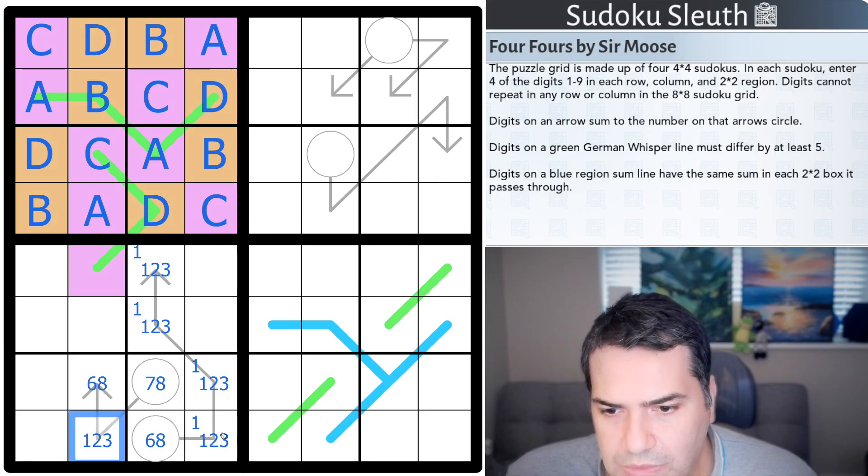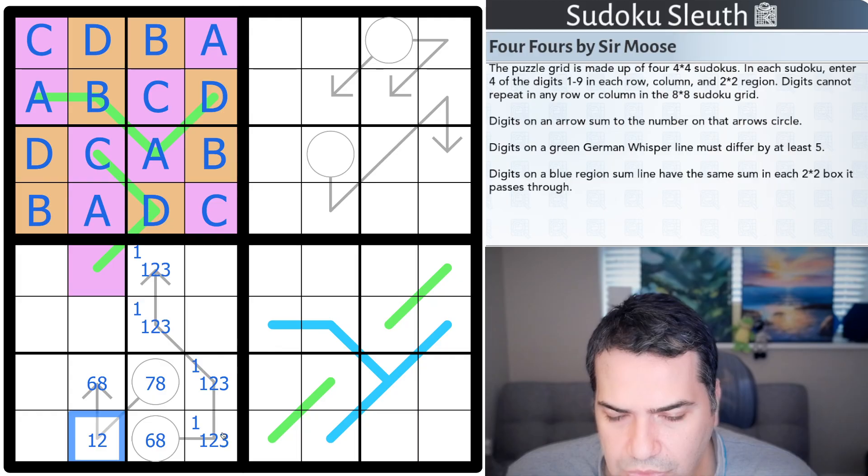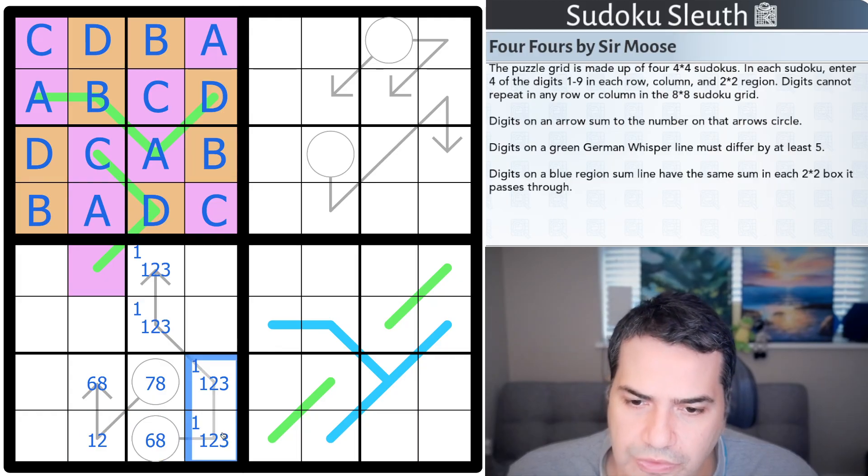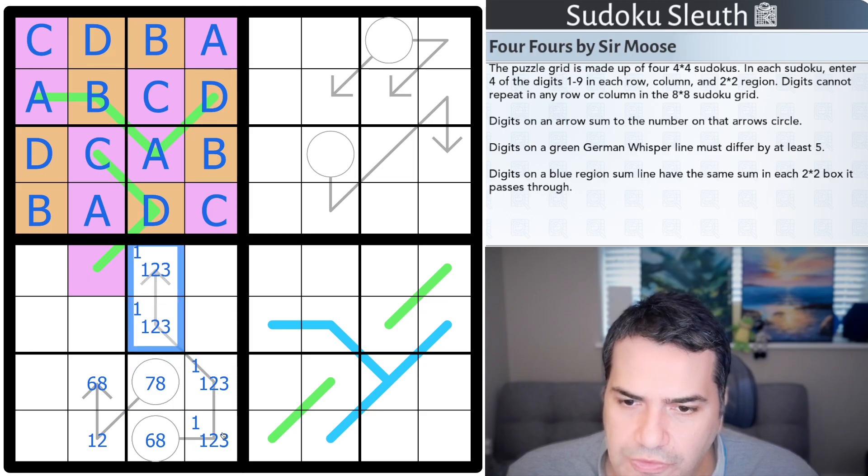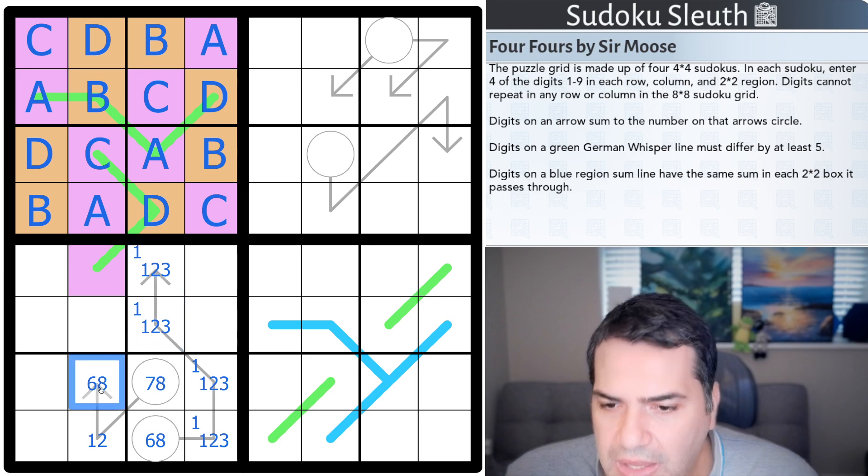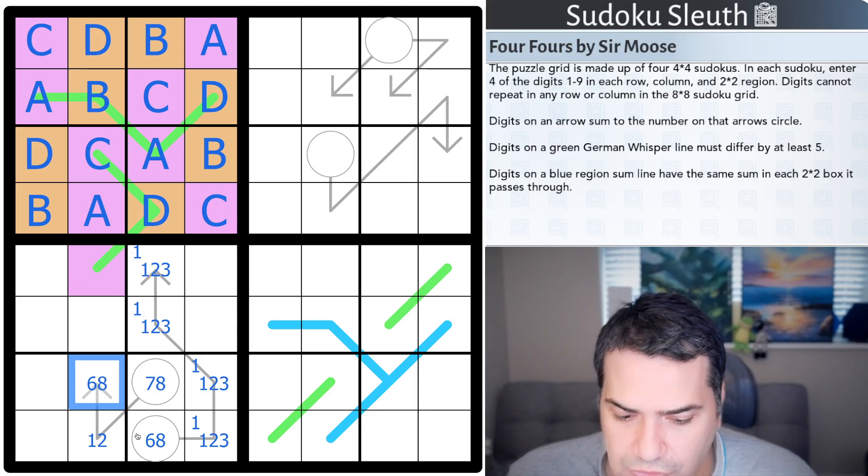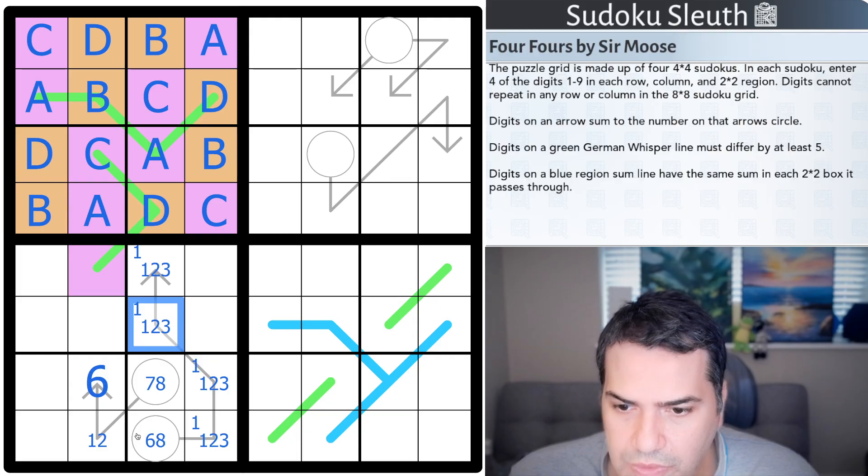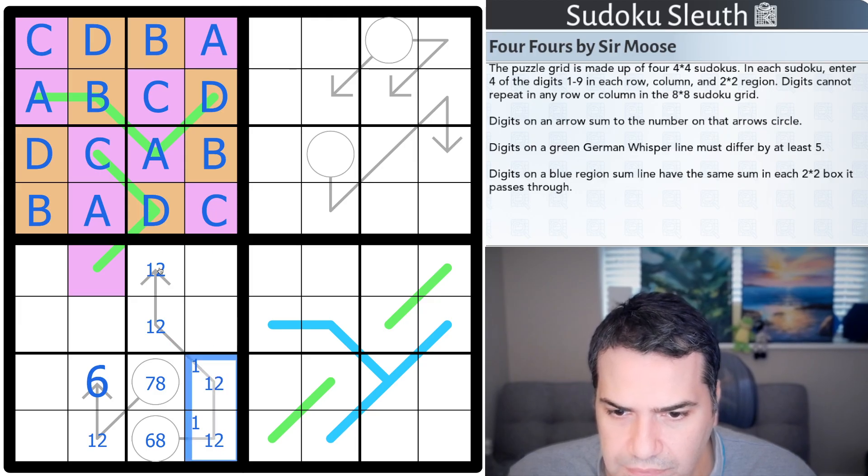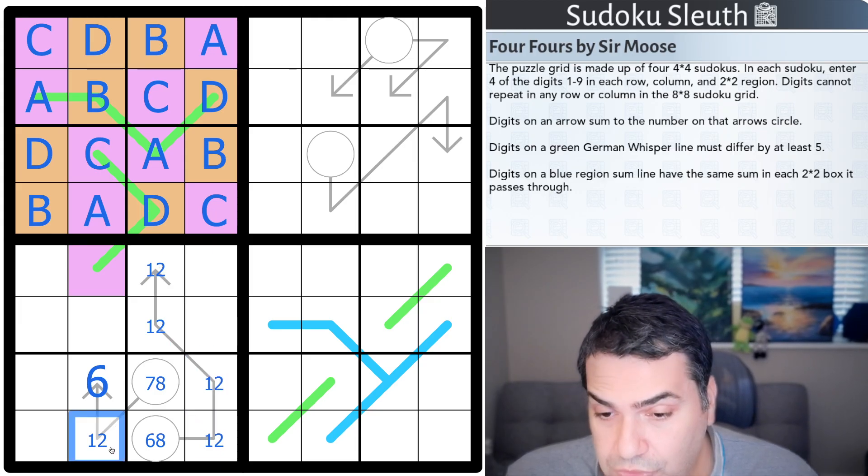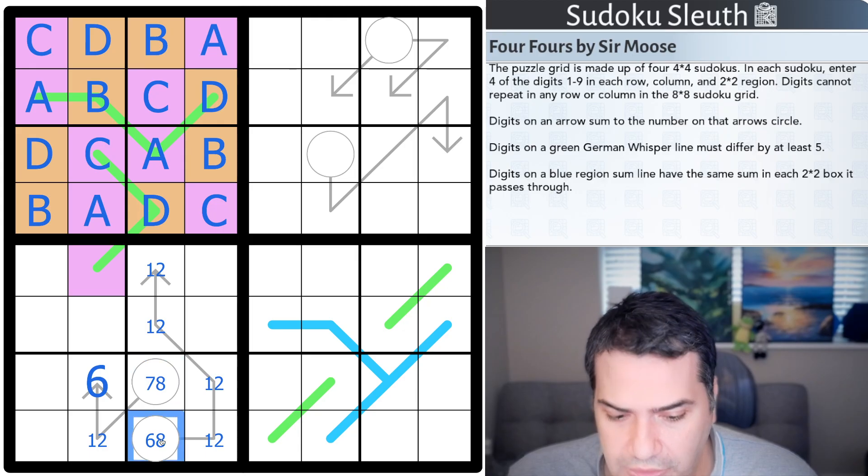And because all of them, yeah, so B is on a German Whisper line, A is on a German Whisper line, C is on a German Whisper line, and D is on a German Whisper line. So, whichever one is a 4, there is a 9 as well up here. And if there is a 9 in there, this can't be a 9. So, this is 7 or 8. I mean, I'm pretty sure that means that can't be a 3, can it? Yeah, that can't be a 3. This is 1 or 2. It doesn't actually remove the 3s, does it? Let's think about this.